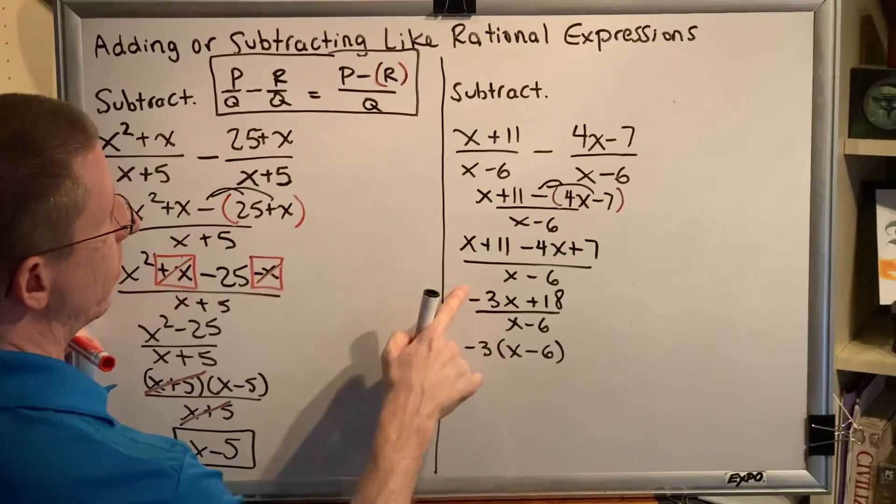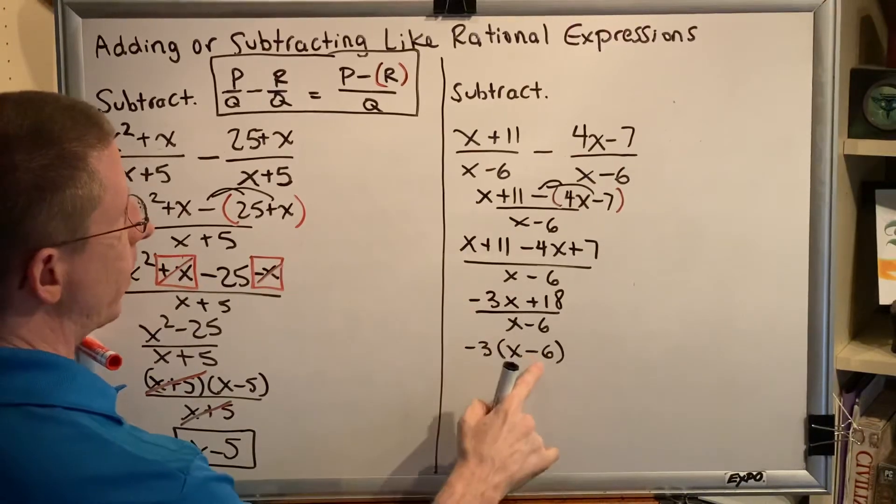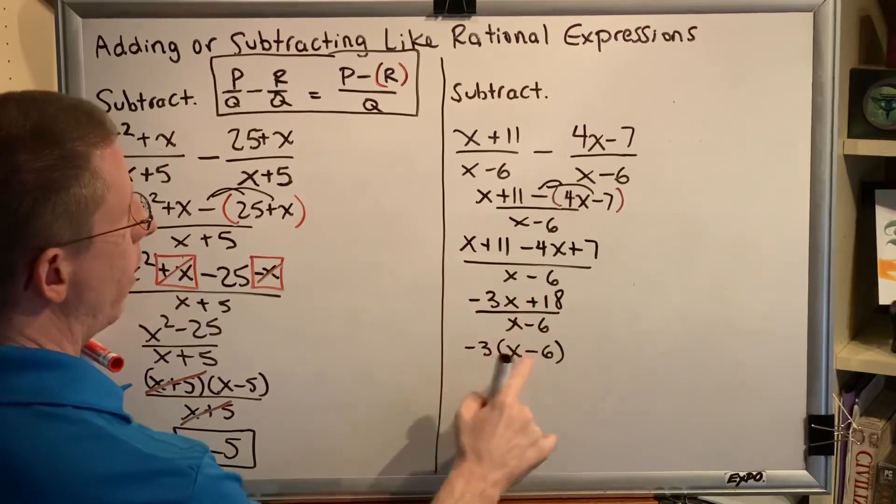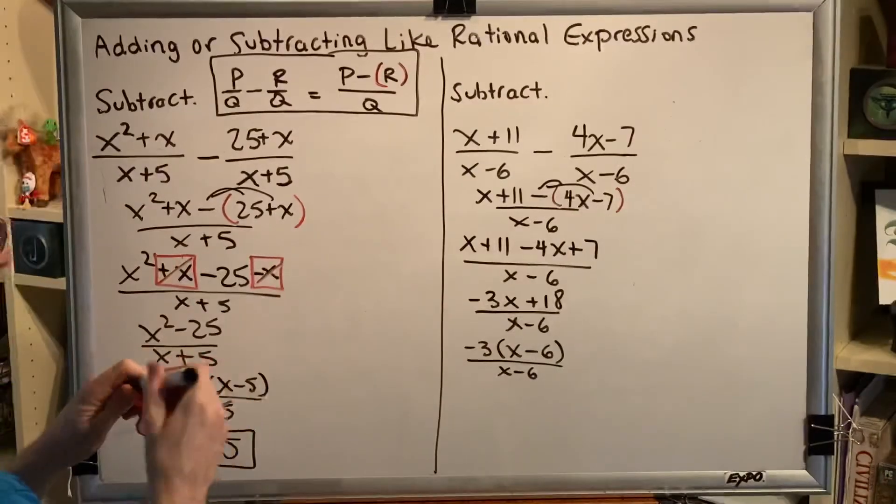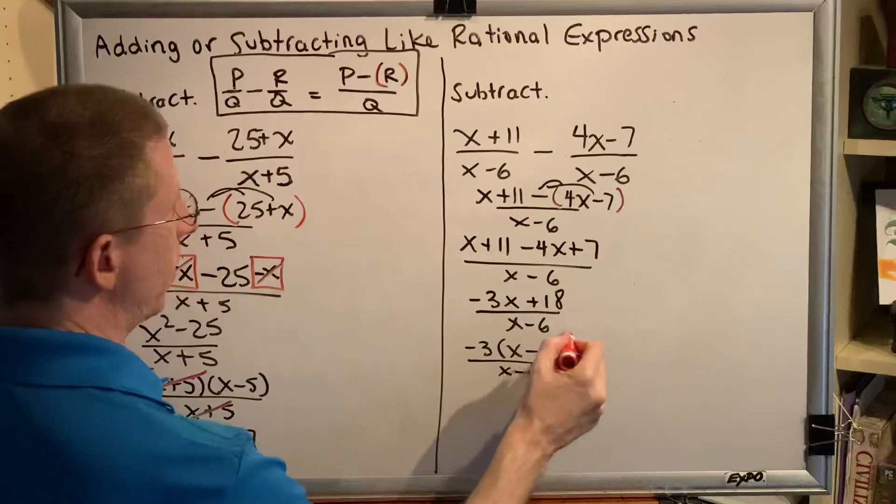Negative 3 times x is negative 3x. A negative times a negative is a positive, and 3 times 6 is 18. So we can see that we do have a common factor, top and bottom, which is this x minus 6.